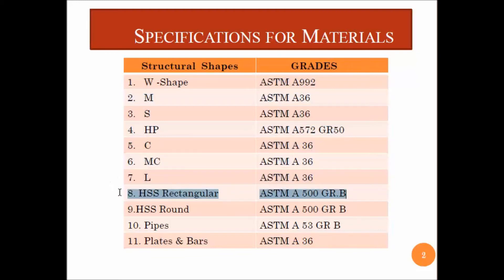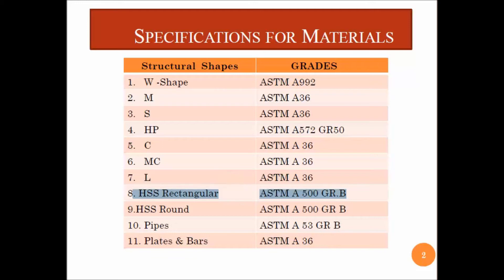The seventh one is HSS rectangular. These are hollow sections and they come in square, rectangular, and circular cross sections. Their purpose is they may be used as columns, beams, bracings, and truss components. The eighth one is HSS round, which is similar to HSS rectangular and has the same usage.